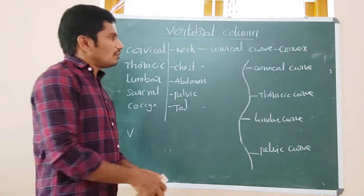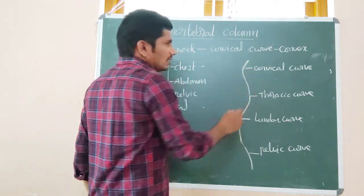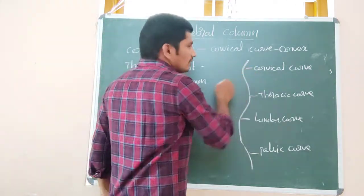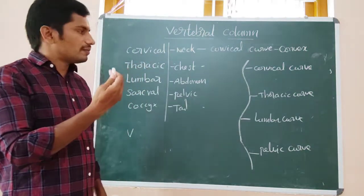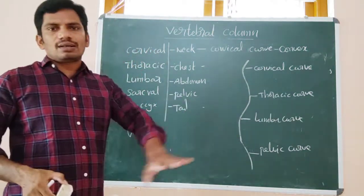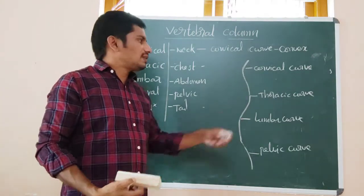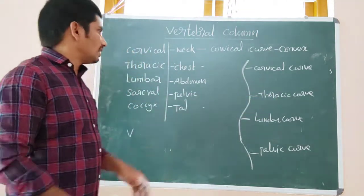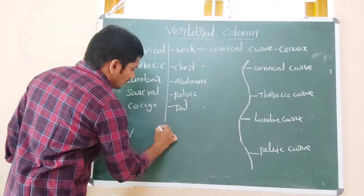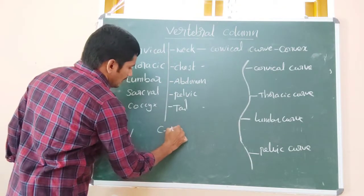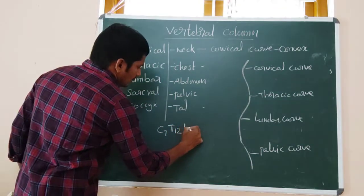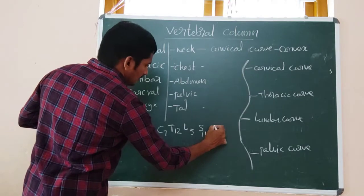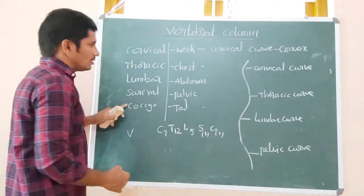Because of these curvatures, when a child is born and wants to investigate its surroundings, the neck region curves forward — giving the cervical forward convex. When the child is crawling on hands and legs, that's why the thoracic region has a backward convex. The formula is: cervical 7, thoracic 12, lumbar 5, sacral fused as 1, and coccyx also fused as 1.